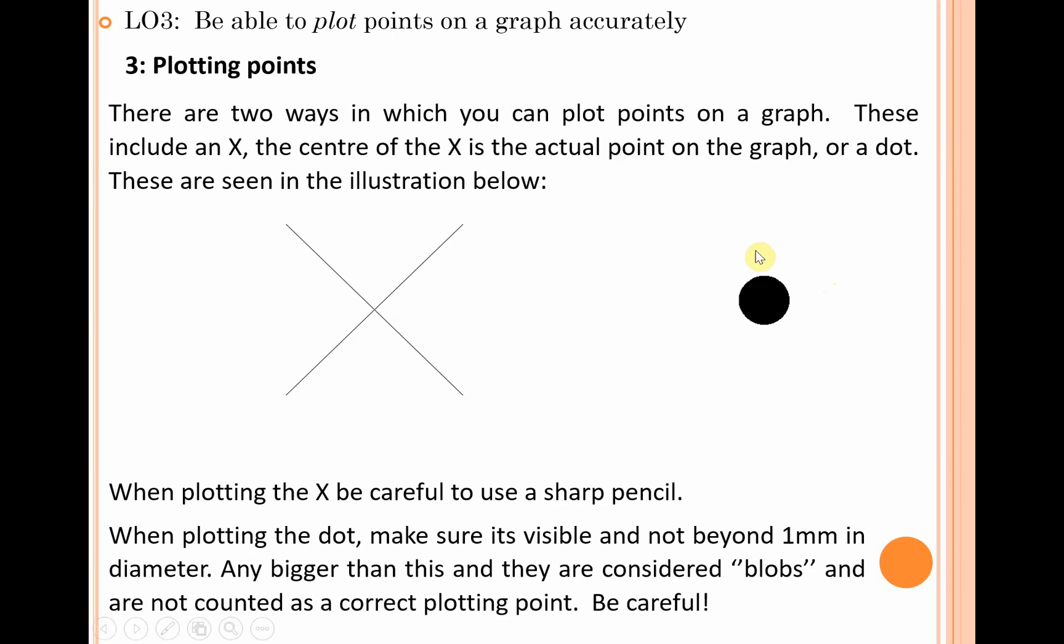When you are plotting the X, make sure you use a sharp pencil. If you're using a very blunt pencil, you could end up losing a mark because it's too thick and there's a bit of a smudge at the very center. That could be taken down in terms of a quality mark. I've seen the next point in particular as a common problem when you're plotting the dots. If you do the dot technique, I'd recommend putting a wee circle around it just to help the examiner spot it.